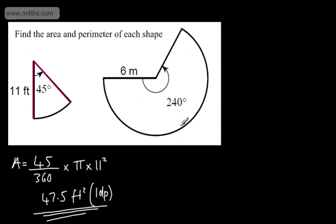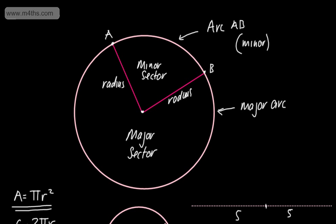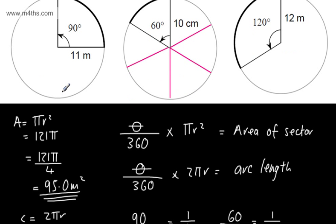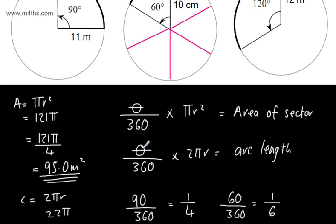Let's just recap. We're simply looking at a portion of the circle. We know the area of the circle is πr² and the circumference is 2πr or πd. All we do is take how many degrees we have over 360 and multiply by πr² for the area of the sector, or by 2πr for the arc length.